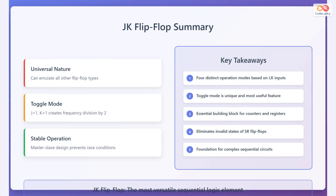In summary, the JK flip-flop is universal in nature and can emulate all other flip-flop types. Its toggle mode, when J equals 1 and K equals 1, creates frequency division by 2, and its master-slave design prevents race conditions.